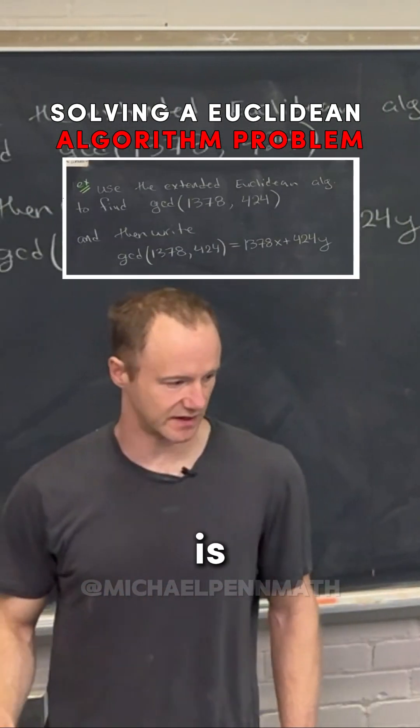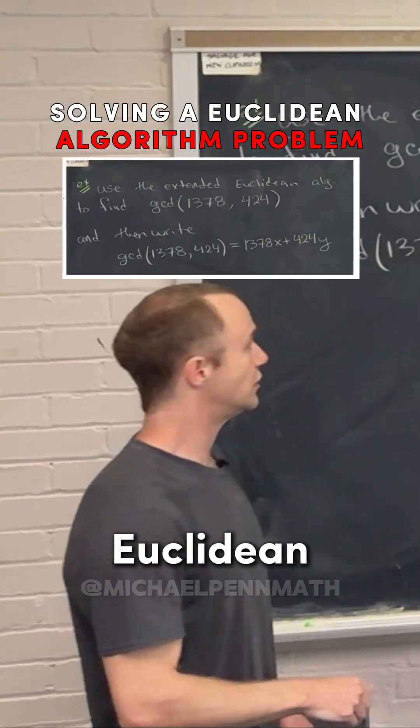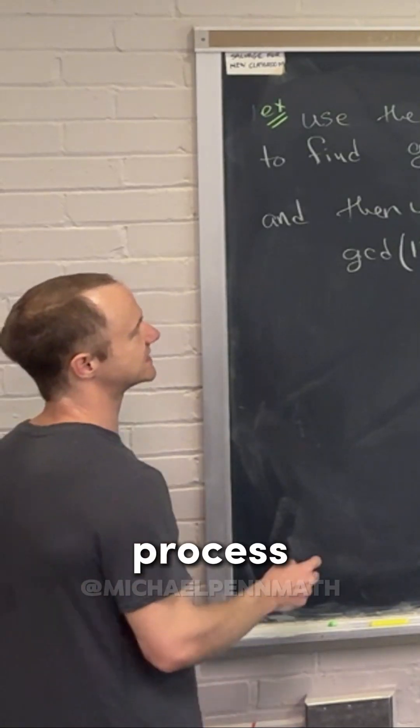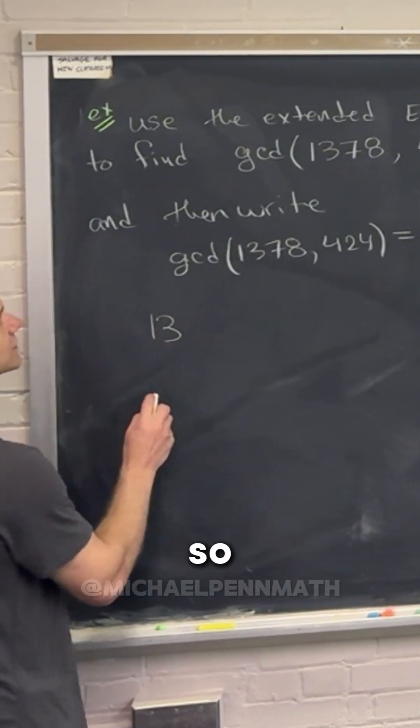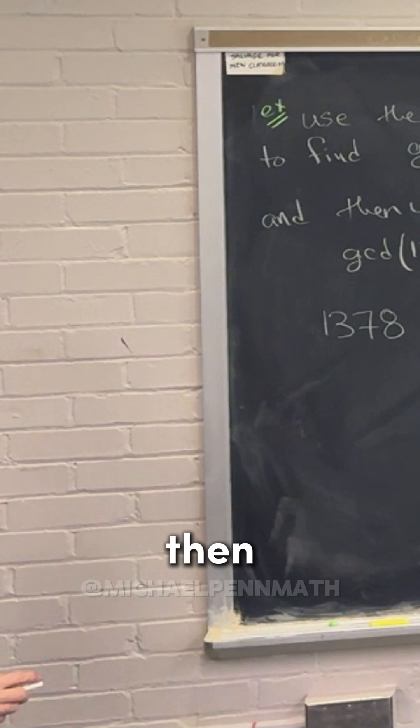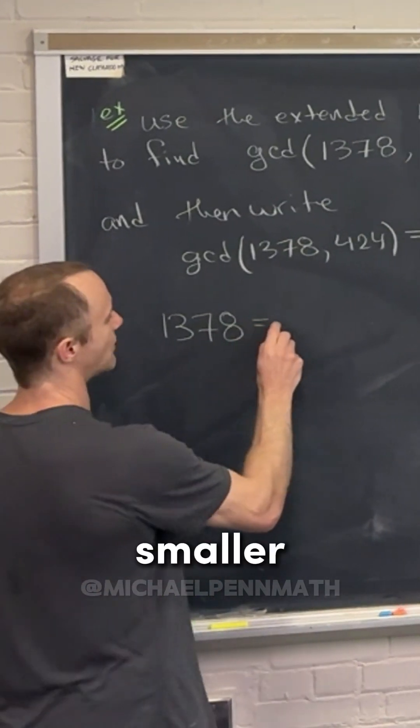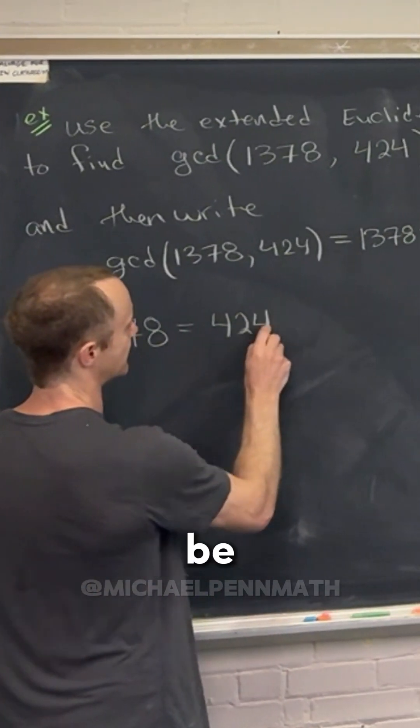The first step is the Euclidean algorithm. That process starts with the larger number, so 1378, and then you divide the smaller number into that, so it's going to be 424 times something.